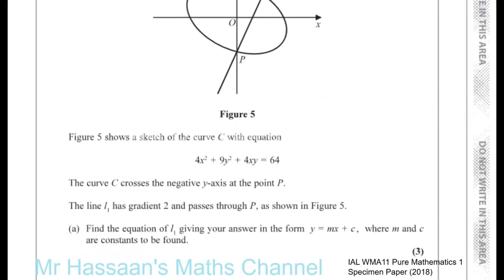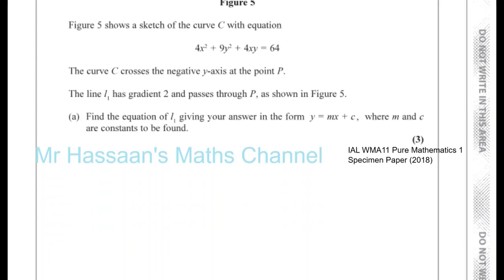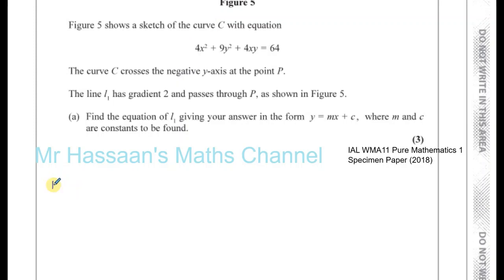Find the equation of line L1 and give your equation in the form y equals mx plus c, where m and c are constants to be found. So we need to find the equation of a line, and as we know, to find the equation of a line, we need two pieces of information.